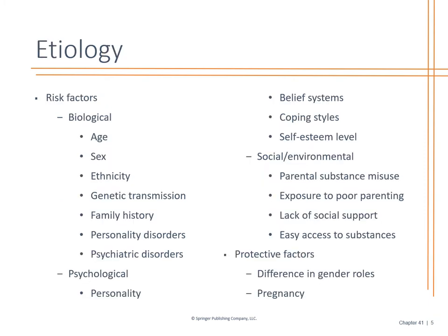Looking at the risk factors: family health history is very important. We look at age, sex, ethnicity, cultural backgrounds, genetic transmission, and family history. We look at personality disorders and psychiatric disorders — is there anxiety or stressors that caused them to utilize substances as a coping mechanism? Psychological factors include their personality and coping styles. A lot of patients don't know how to cope, and we have to help them with that. Do they have any self-esteem issues? We look at the social environment — what did they grow up with? Was there poor parenting, a lack of social support, or easy access to substances?